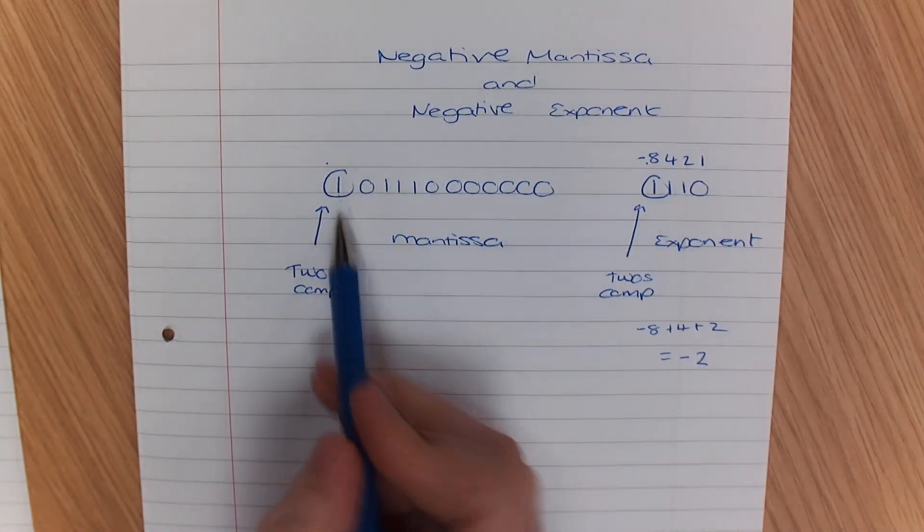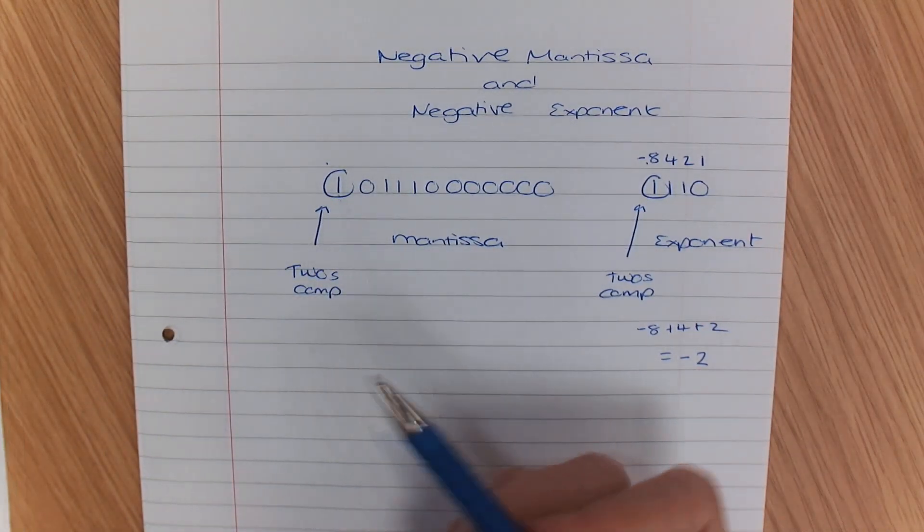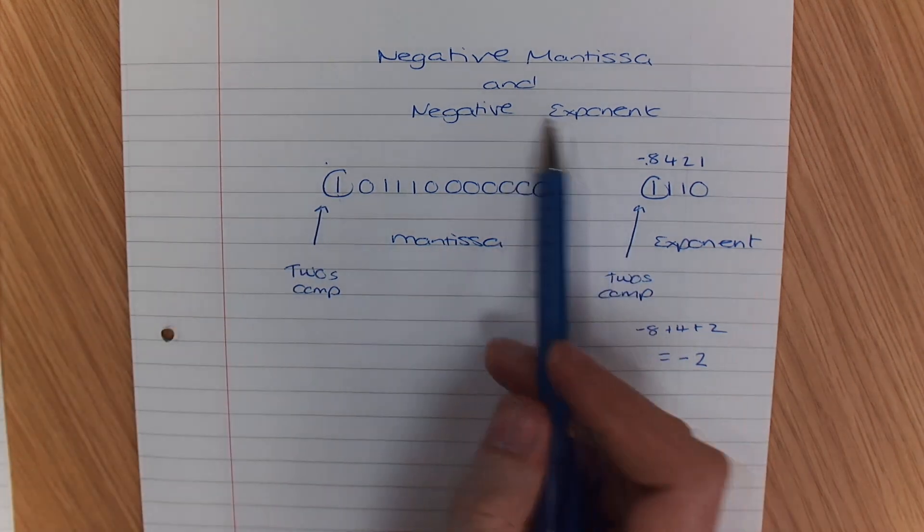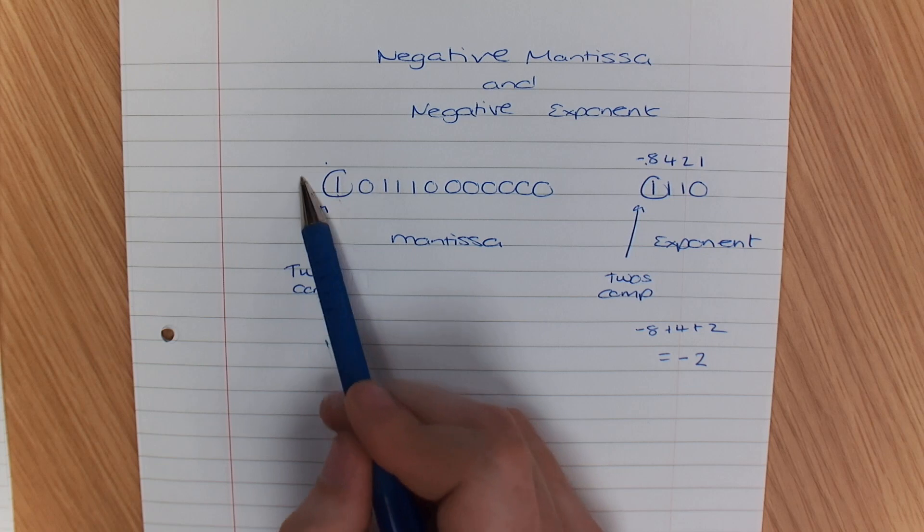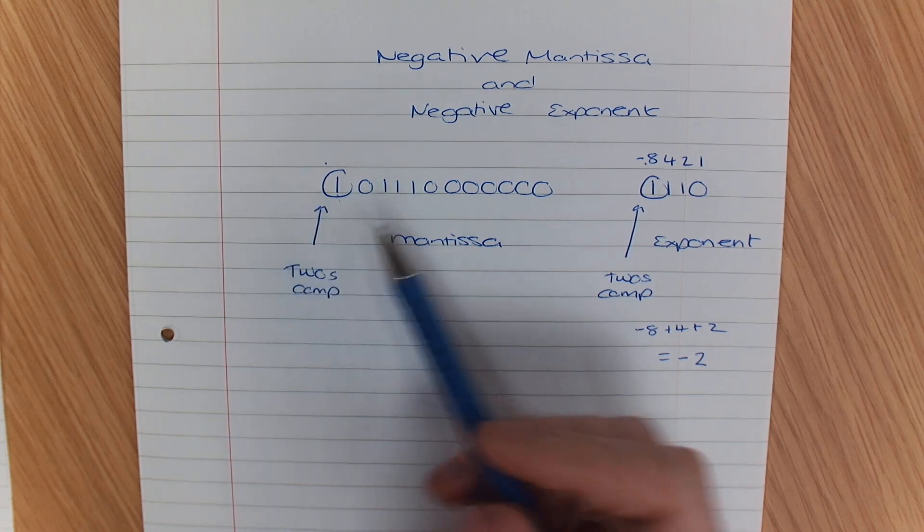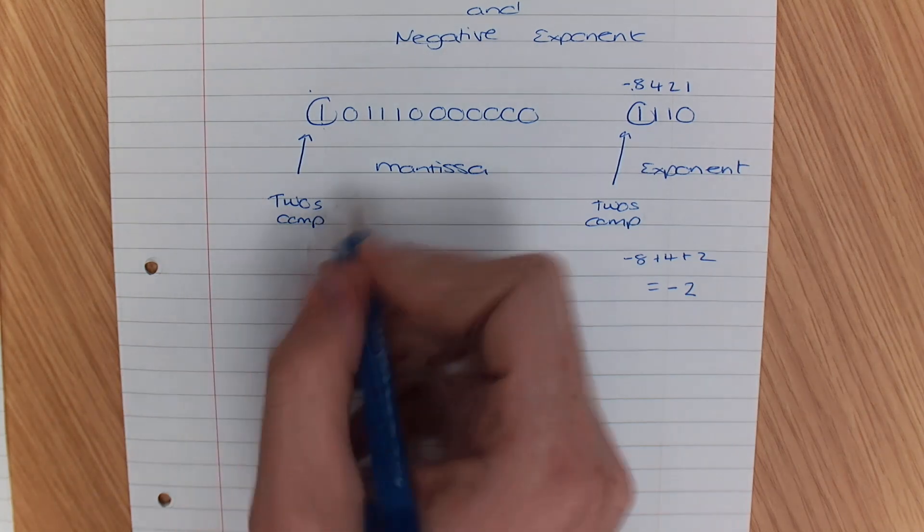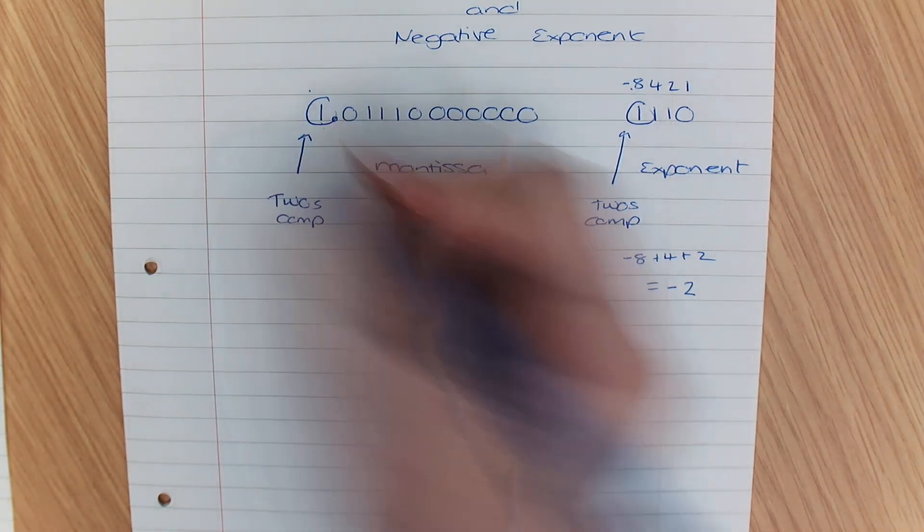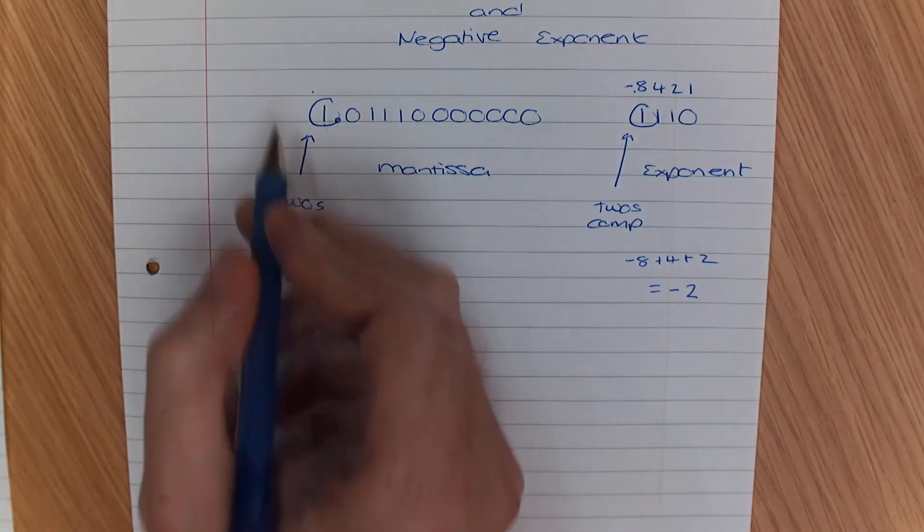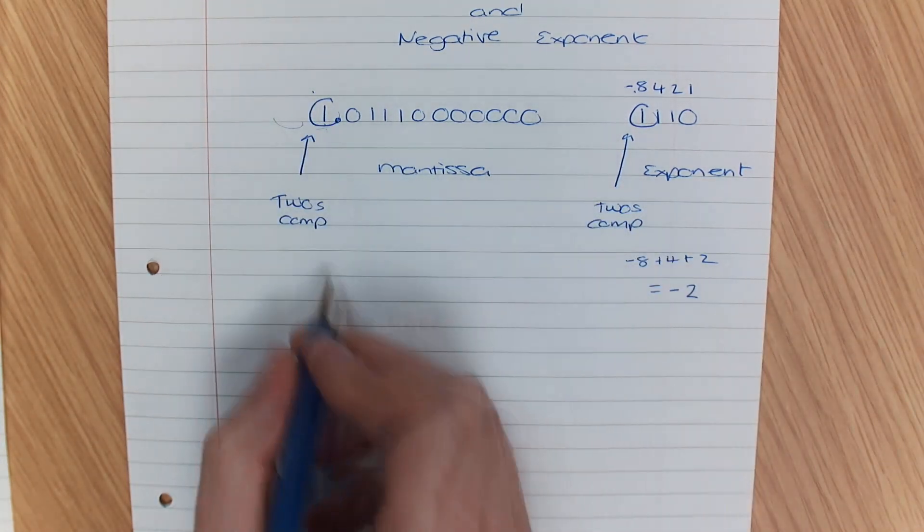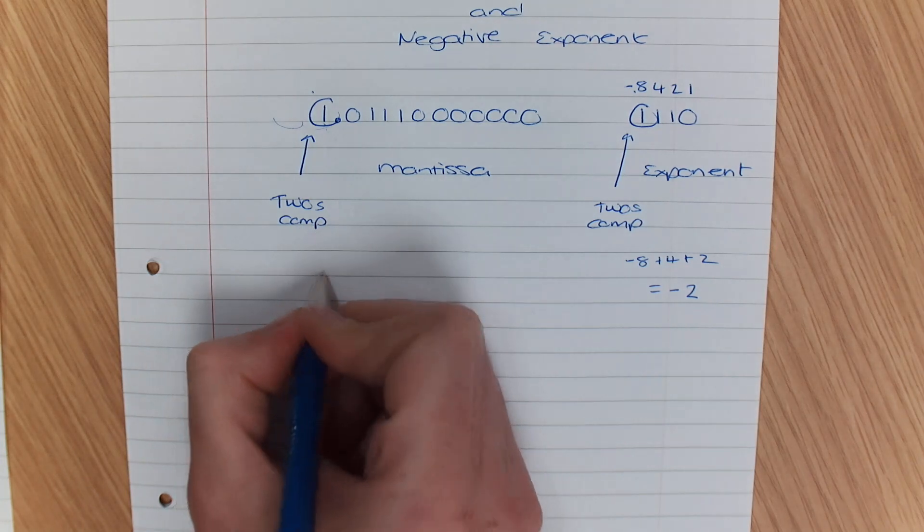We also know this is a negative number. Now when we're working with negative mantissa and negative exponent, what we've got to do is pad it with 1's. Because it's a negative number, what we do, and I'm just going to write this out, is the decimal place was there, which means it's normalized. But what we do is rather than just move it, pad it with 1's. So I'm going to write it out first.